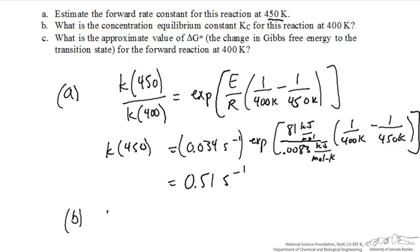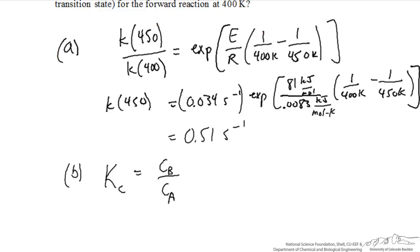For this reversible reaction system, we can define Kc as being equal to the concentration of products over reactants. Here we have the simplest of all reactions of A going to B.